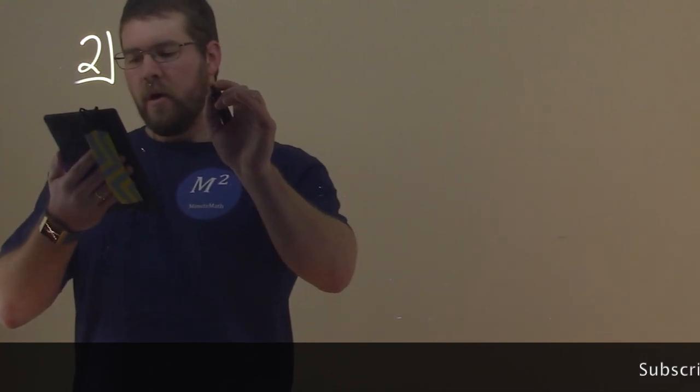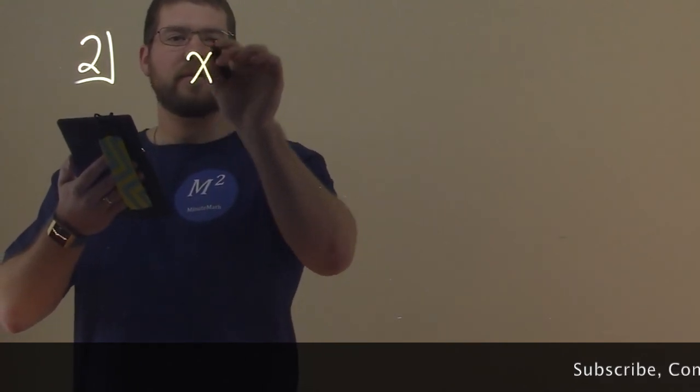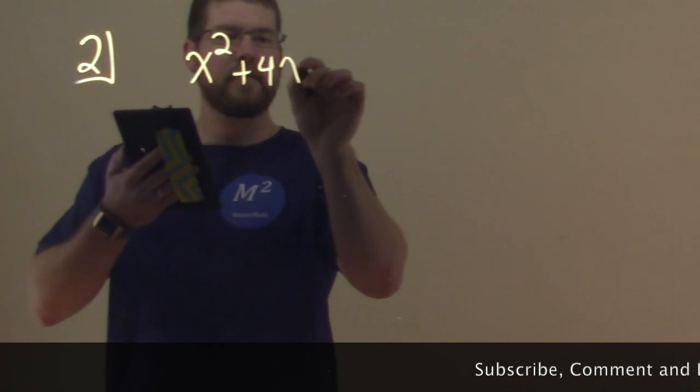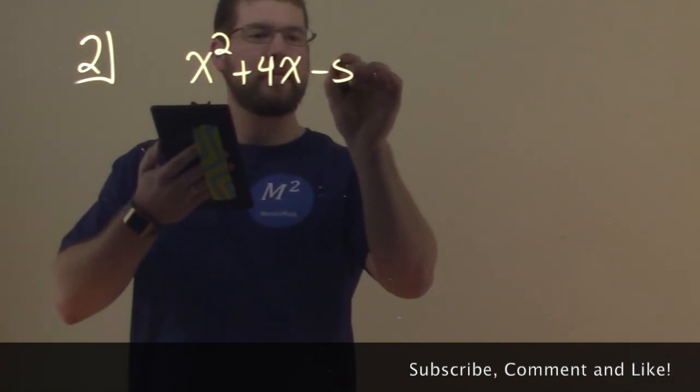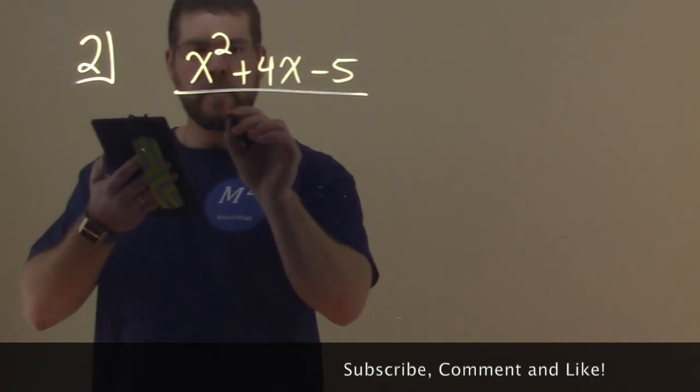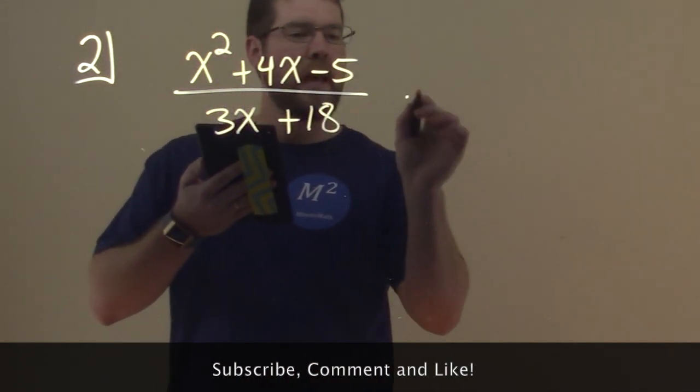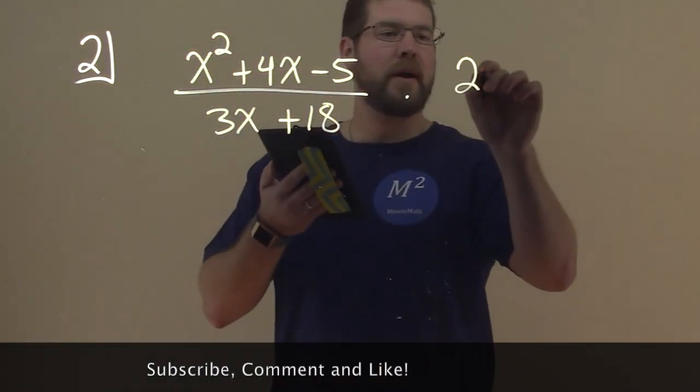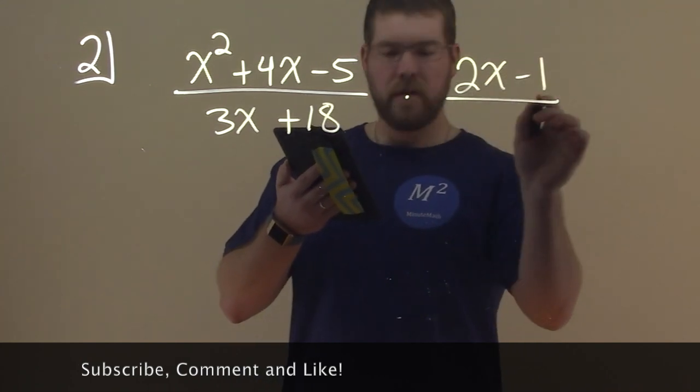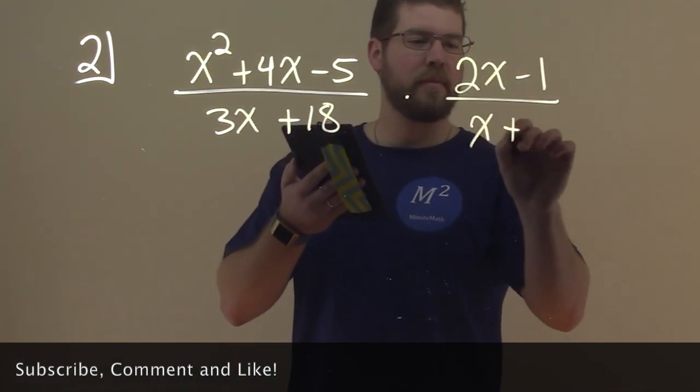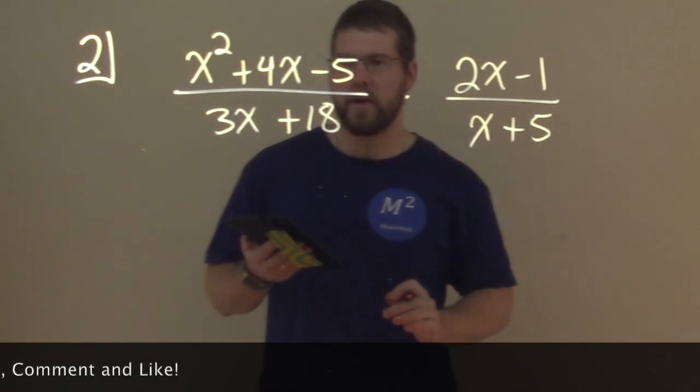Let's say we have x squared plus 4x minus 5 over 3x plus 18, and we're multiplying that to 2x minus 1 over x plus 5.